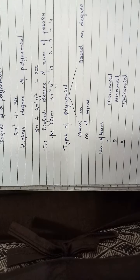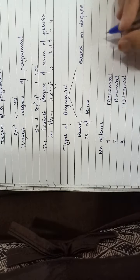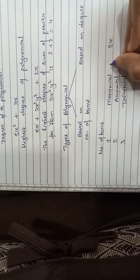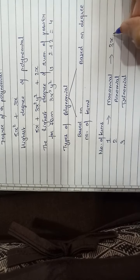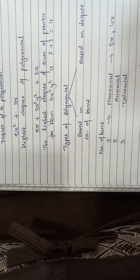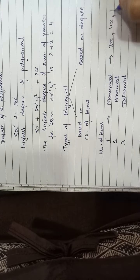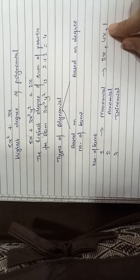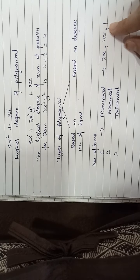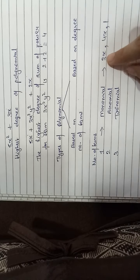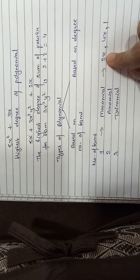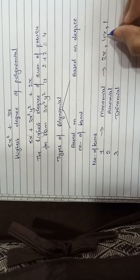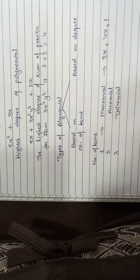Let us make it very clear with examples. Monomial: 3x is a monomial, 4x is a monomial, 1 is also a monomial — it is a constant polynomial but it is a monomial. There is only 1 term.